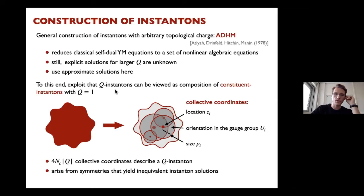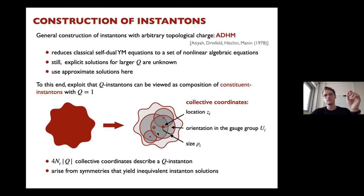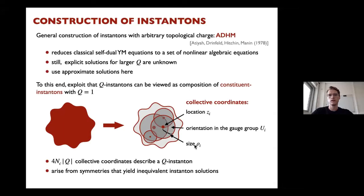To tackle this problem, I exploit the fact that a multi-instanton with charge q can be viewed as a composition of constituent instantons with unit topological charge. Each constituent has its own location, orientation in the gauge group, and size — these are the instanton collective coordinates. For general SU(N_c), there are 4N_c·q collective coordinates, arising from symmetries of the system: translations give location, dilatations give size, and so on.